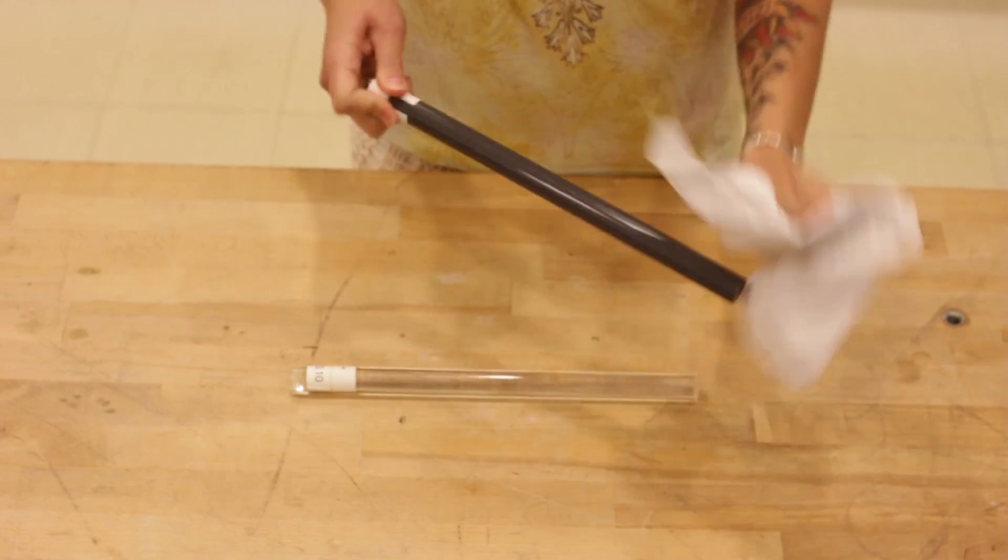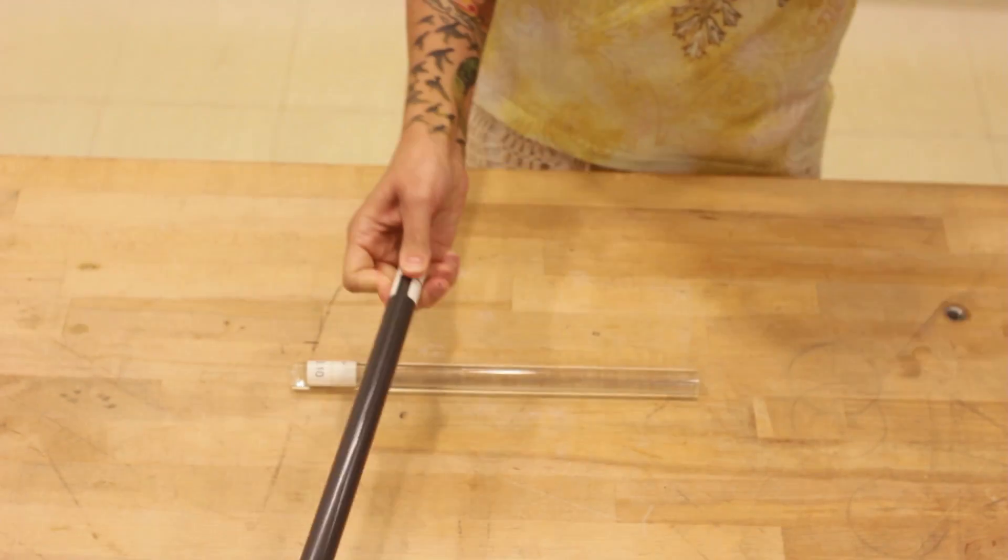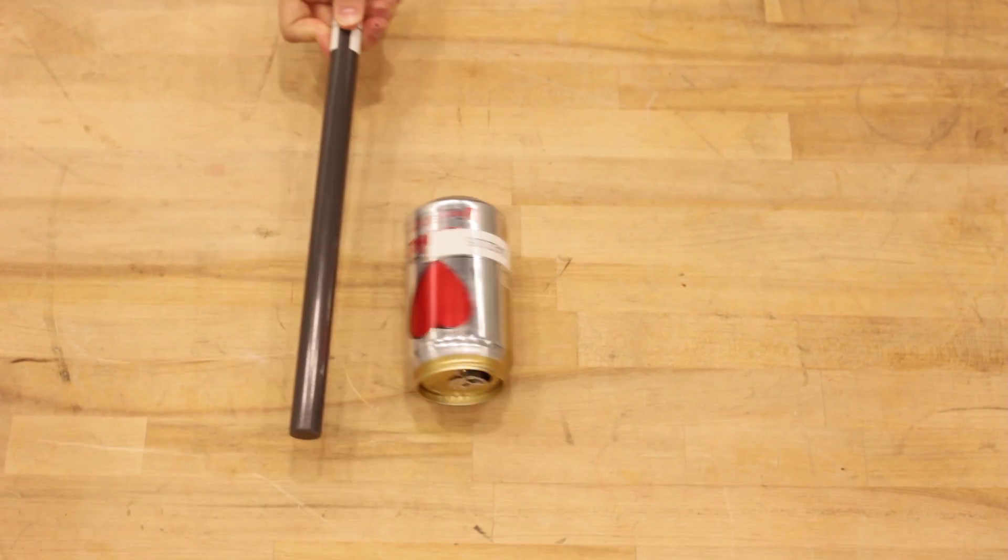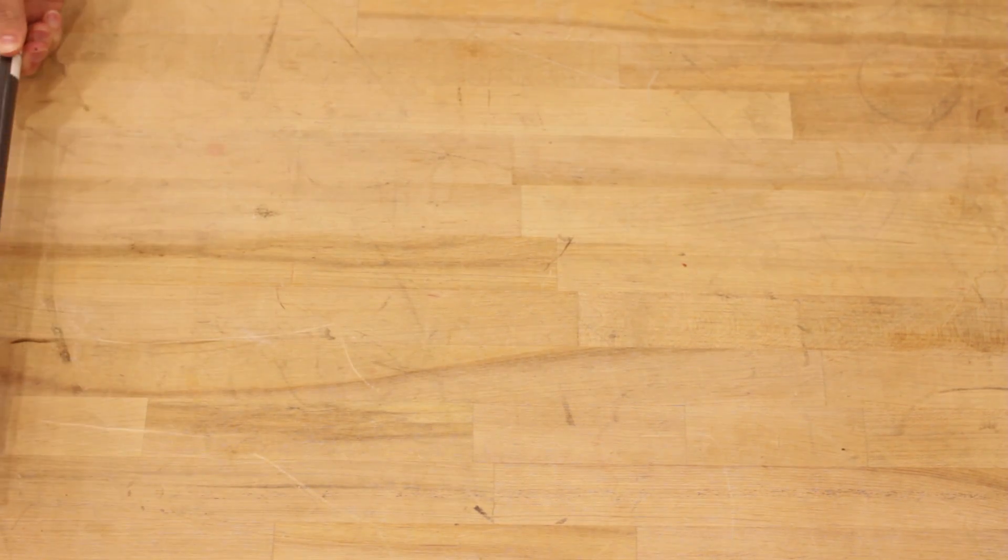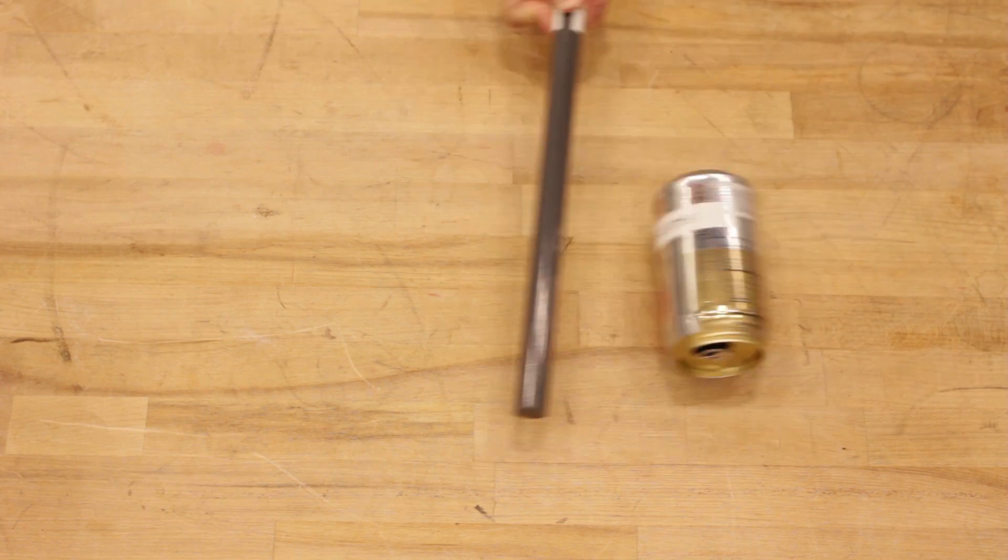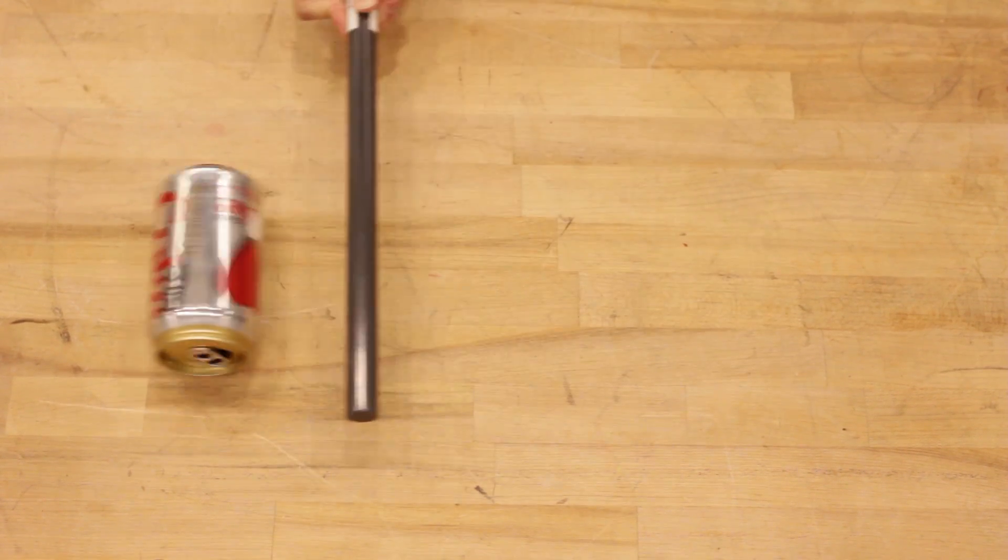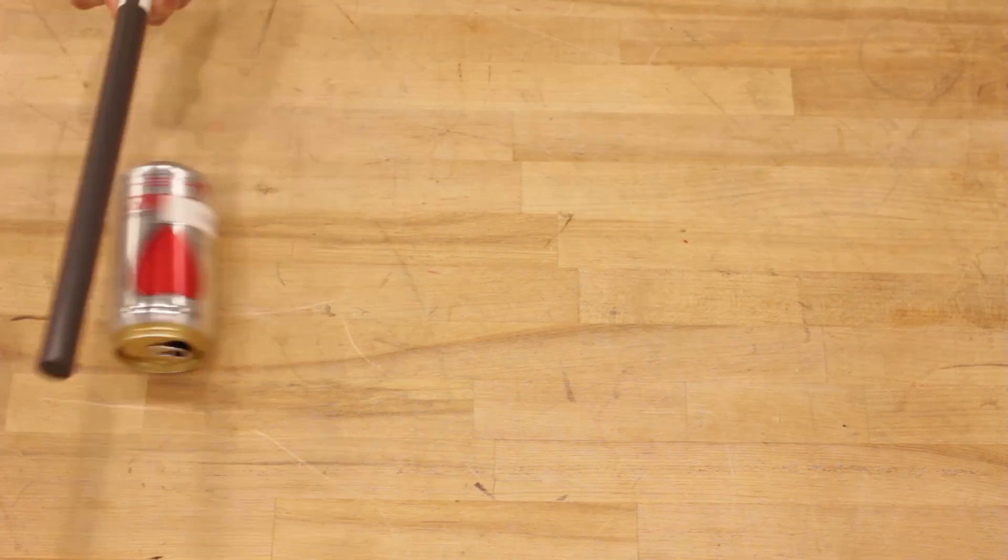So if we charge up the PVC rod and bring the negatively charged rod near the can, it causes the charges in the can to separate, attracting the positive charges to the near side and repelling the negative charges to the far side. The positive charges are closer and the rod attracts the can.